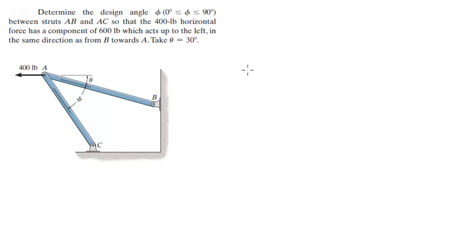Alright guys, now we're going to do this problem which says determine the design angle Phi, this angle right here between struts AB and AC, so that the 400 pound horizontal force has a component of 600 pounds which acts up to the left in the same direction from B towards A. So we got a component of a force right there.